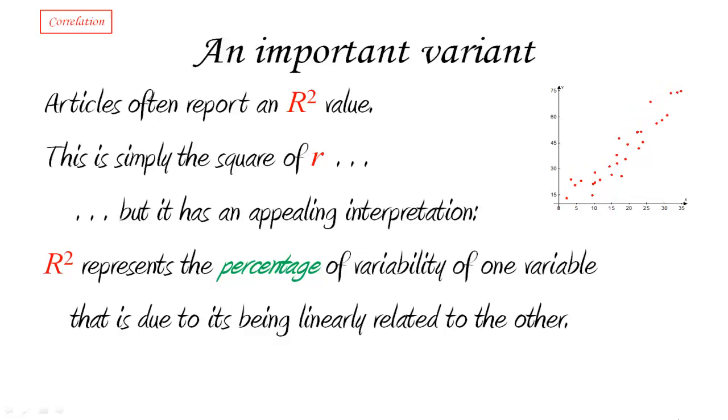So this R squared value basically tells us, out of the whole variability that we can see horizontally or vertically in a variable, what percentage of it is really due to the fact that the two variables are related and what percentage of it is actually left over as random variability.